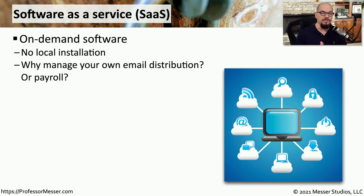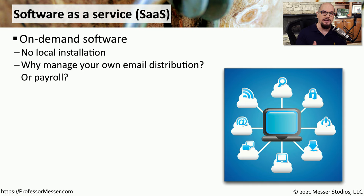There are some cloud models that require almost no effort on your part. You don't have to load an operating system, configure or write any software, or make sure that the system is constantly updated and patched. This is called software as a service, or SaaS. Software as a service is on-demand software that you simply log into and begin to use. You don't have to configure the operating system, write the application, or maintain the application or the data. The third-party cloud provider does all of that for you — you simply log in and use the service they've provided.